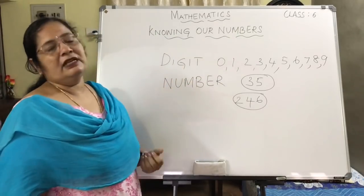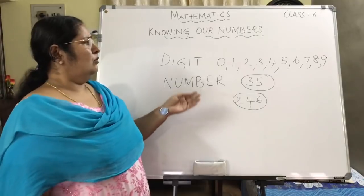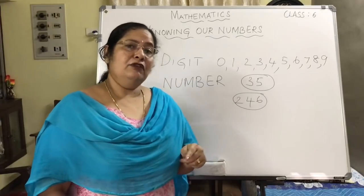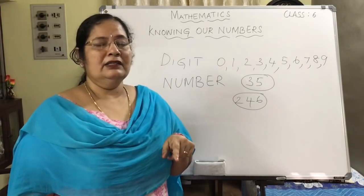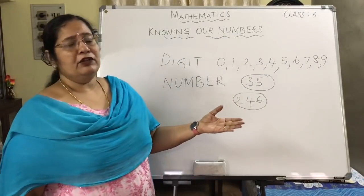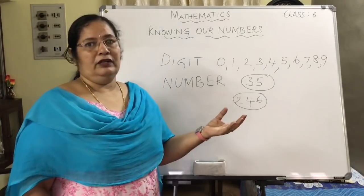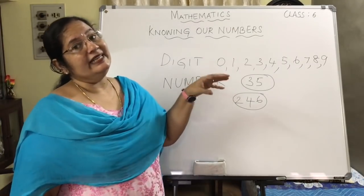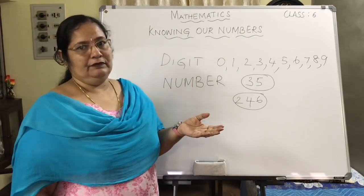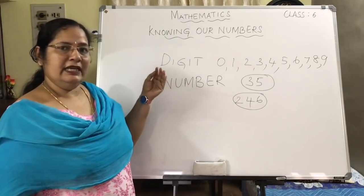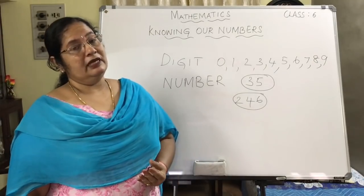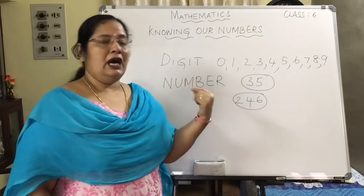Now a question comes to mind: will we call 2, 3 or 4 as only a digit? It can also be called as a number as and when the situation arises. Suppose you want to say about the number 4 — you won't say digit 4, you will say the number 4. But basically it is a digit, or you can say it as a single digit number. So you have understood the difference between a digit and a number.